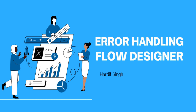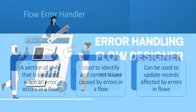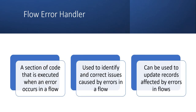Let's quickly jump into error handling. First of all, what is a flow error handler? It's a section of code that is executed when an error occurs in the flow. Similar to try-catch code, this is the flow handler which handles the errors whenever an error occurs. It's basically the catch part, and it will automatically run when there is an error in the flow - you don't have to call this separately.